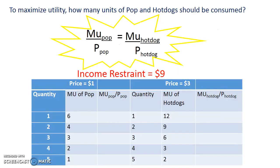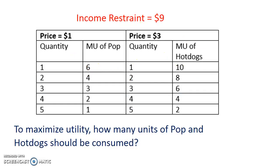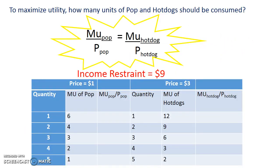The first thing you need to do is go to the formula: the marginal utility per dollar of pop needs to equal the marginal utility per dollar of the hot dog. Whenever you see a chart like this, you always want to add columns for marginal utility per dollar, because you'll need those to answer any questions.